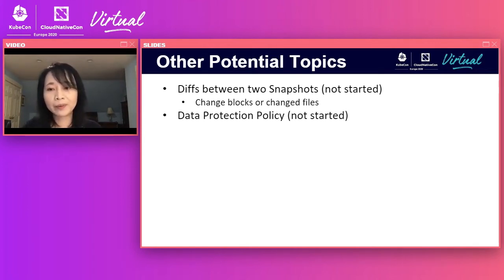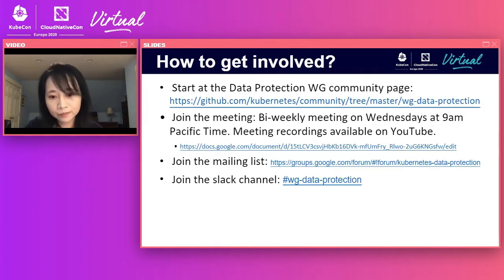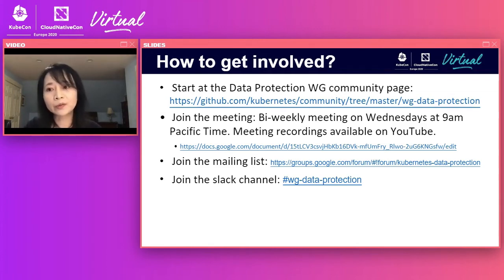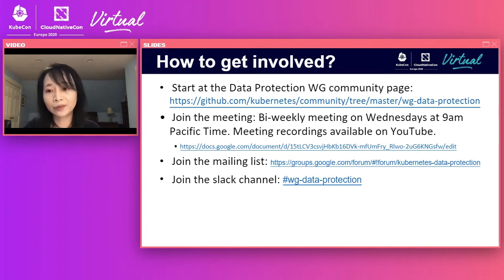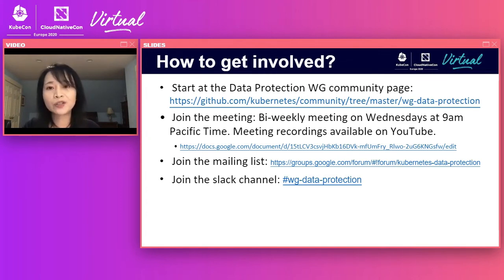If you are interested in getting involved in this working group, take a look at the working group's community page first — it has a lot of information to get you started. Join the bi-weekly meeting on Wednesdays at 9 a.m. Pacific time. Previous meetings are recorded and available on YouTube. Join the mailing list and the Slack channel. Thank you all for attending the session. If you have any questions, please don't hesitate to reach out to us.